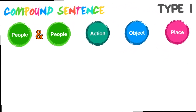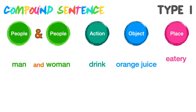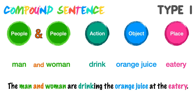Kita nak contoh yang berikutnya supaya adik dapat meningkatkan lagi kefahaman. People yang pertama: Man and Women. Action: Drink. Object: Orange Juice. Place: Eatery — eatery itu tempat makan. Ayat lengkap: The man and woman are drinking the orange juice at the eatery. The man and woman are drinking the orange juice at the eatery. People yang pertama adalah man, People yang kedua adalah woman. Bagaimana kita nak lekatkan people itu, kita gunakan 'and' — men and women, the men and women. Senang kan?